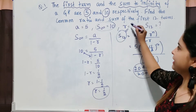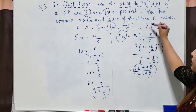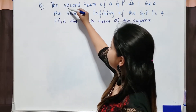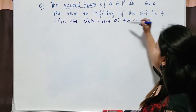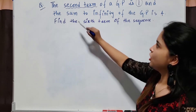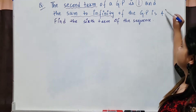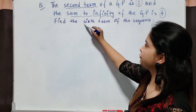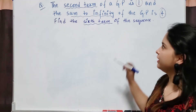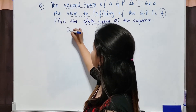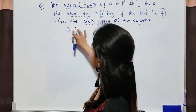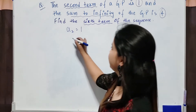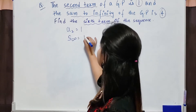Using these two formulas, first we found r, then we used the formula to find S₁₂. Look at the next question. In the next question, the second term of a GP is given which is 1. Also, sum to infinity is given which is 4. Using these two values, I have to find the sixth term. So first write down: a₂ = 1 and S∞ = 4.